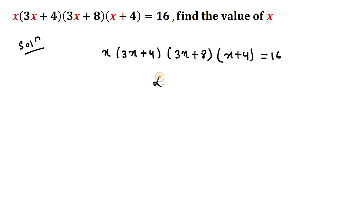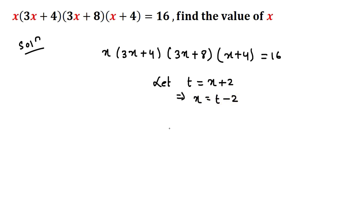In the first step, let us assume t as a variable equals to (x+2). This implies we can write x equals to (t-2). Now we will put the value of x in the above equation.